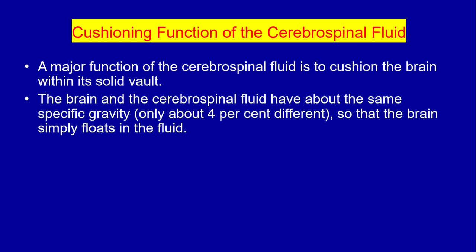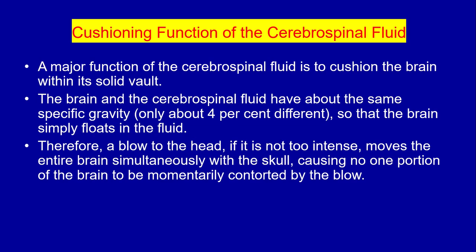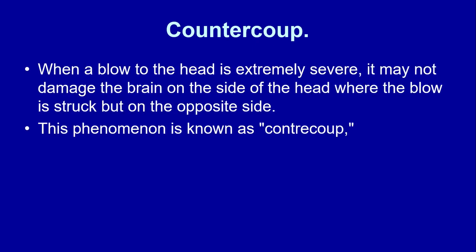A major function of the cerebrospinal fluid is to cushion the brain within the solid skull. The brain and the cerebrospinal fluid have about the same specific gravity — only about four percent difference — so that the brain simply floats in the fluid. Therefore, a blow to the head, if not too intense, moves the entire brain simultaneously with the skull, causing no one portion of the brain to be momentarily countered by the blow.